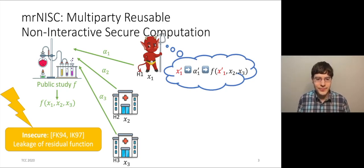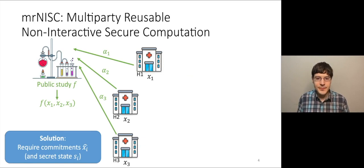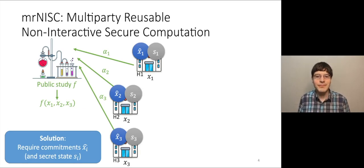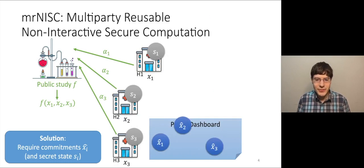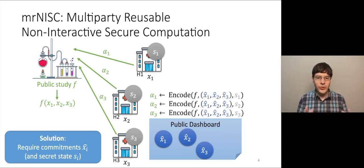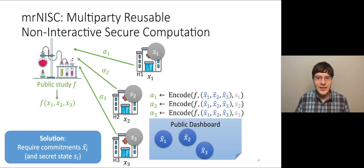To bypass this lower bound, something must give. What we propose in our paper is to allow hospitals to make commitments. Concretely, hospital i will create a commitment X-hat-i and keep the associated secret state Si — secret state of randomness. Then they will publish their commitment. The big difference from before is that the computation encoding alpha-i can depend on these commitments. For example, alpha2 is a function of the study F, the secret state S2 of hospital H2, and most importantly, of the commitments X-hat-1, X-hat-2, and X-hat-3.